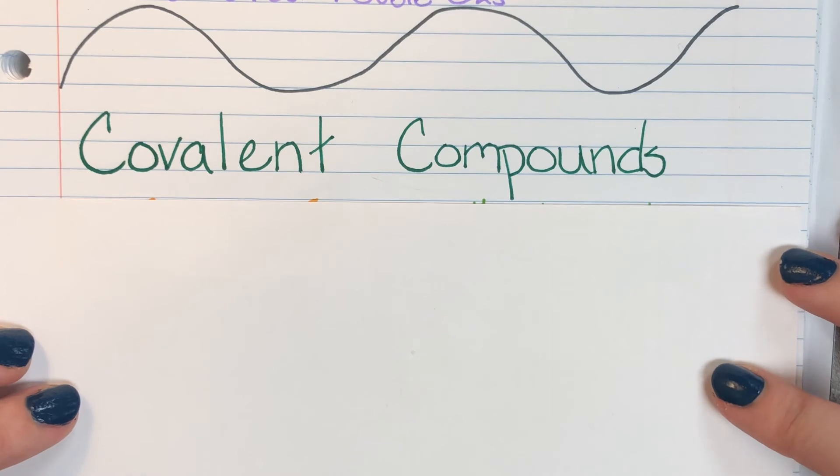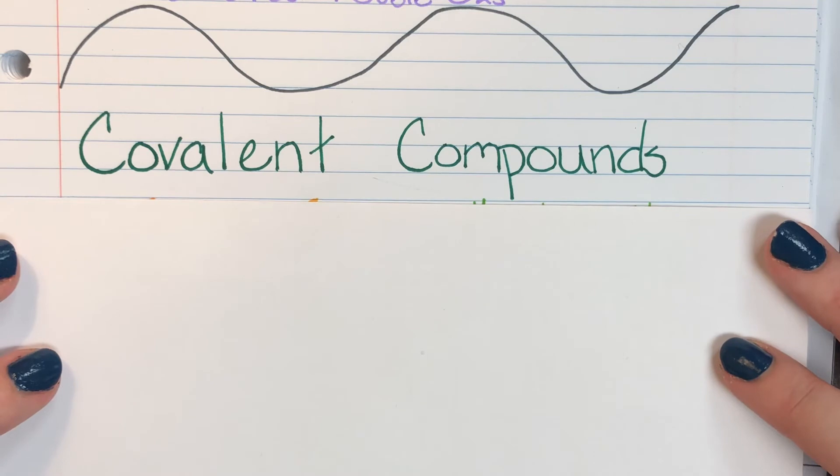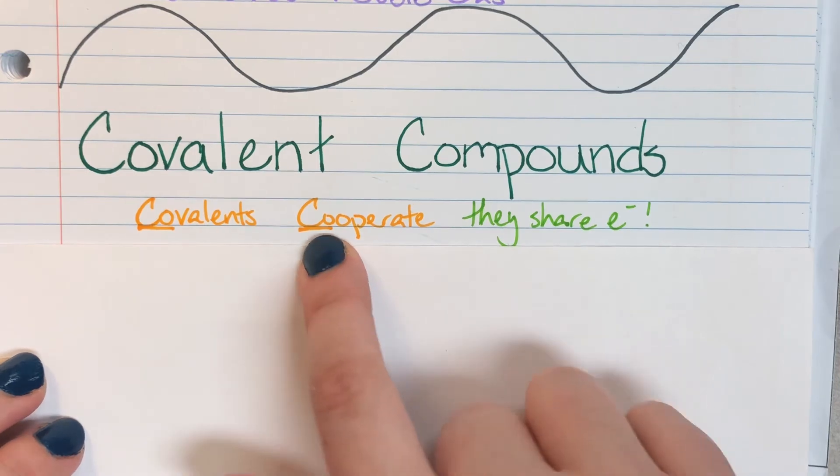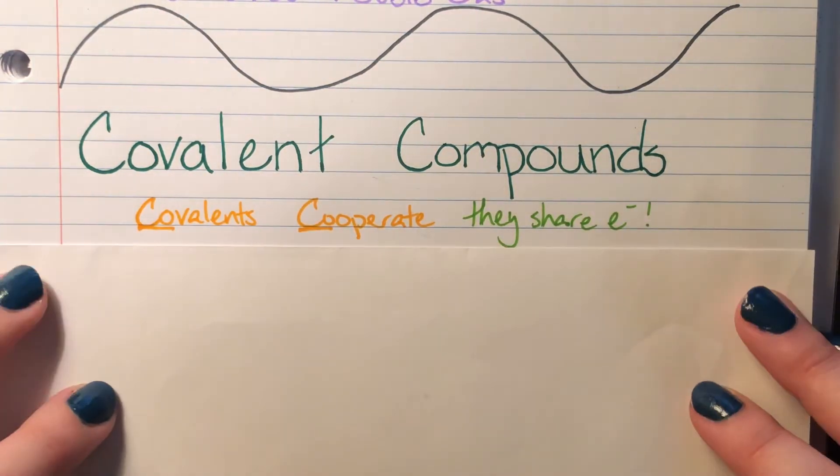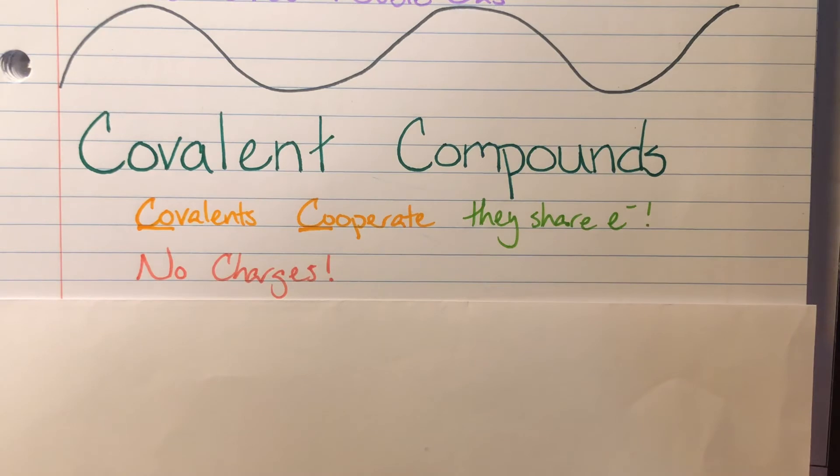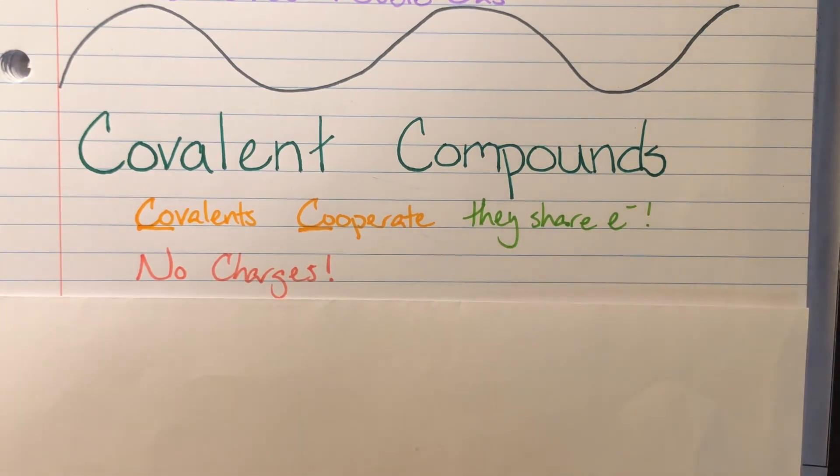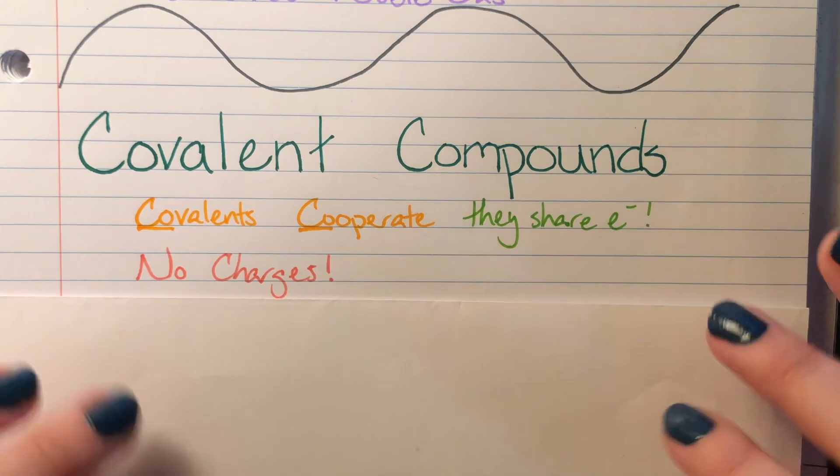So our covalent compounds function differently than our ionics. They are very different. My covalent compounds, instead of stealing electrons, they're going to share electrons. My covalent cooperate. They share those valence electrons because I cannot have any charges with my covalent compounds. Since I do not steal any electrons and I don't give away any electrons, I'm just sharing custody of them, I do not have an imbalance of protons and electrons.